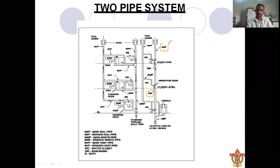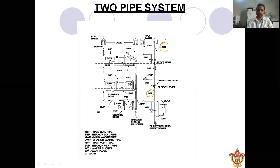In the two pipe system, the soil waste pipe and waste pipe are different and independent. This is the main soil pipe shown in the drawing.